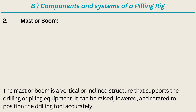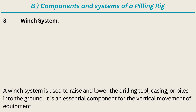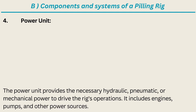Mast or Boom: the mast or boom is a vertical or inclined structure that supports the drilling or piling equipment. It can be raised, lowered, and rotated to position the drilling tool accurately. Winch System: a winch system is used to raise and lower the drilling tool, casing, or piles into the ground. It is an essential component for the vertical movement of equipment.